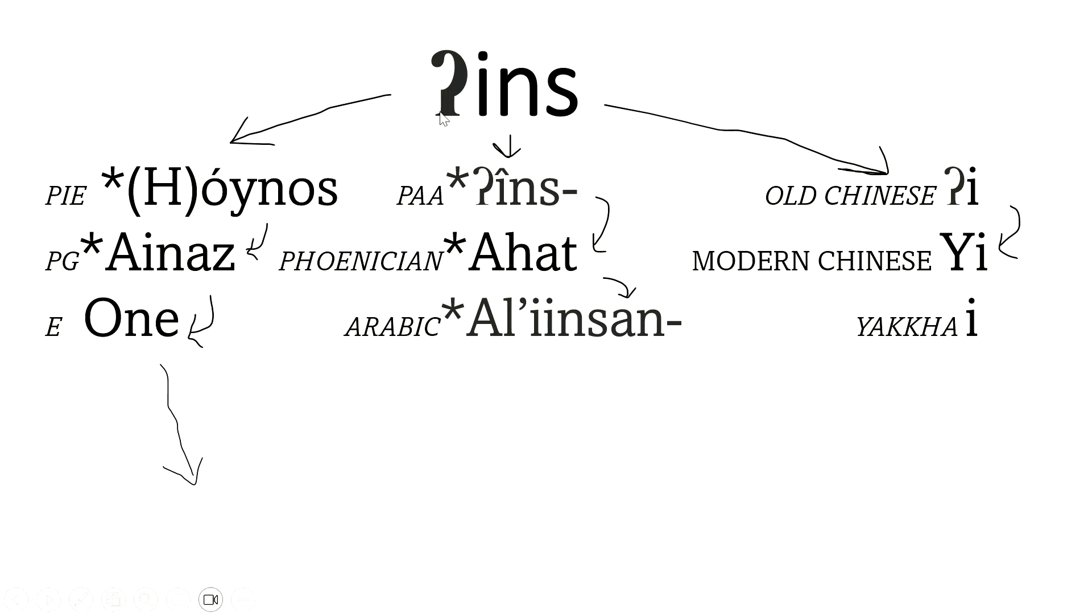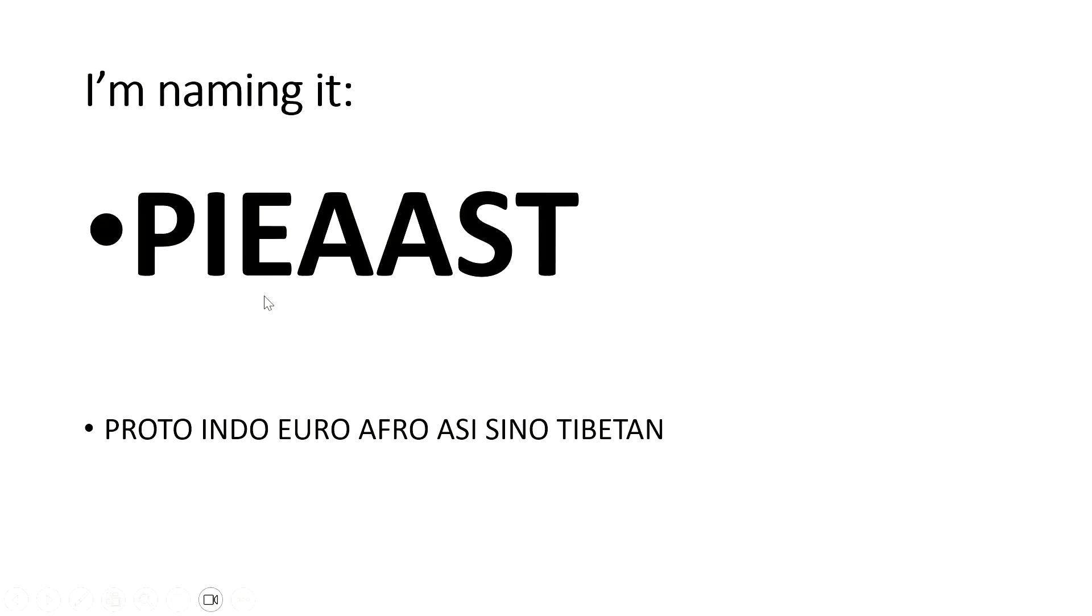Anyway, this is just my thought, and I also include my own language, that's Essenoish, and yeah, Eno, which is the word for one, which comes from English. Anyways, I'm naming it PIAST.